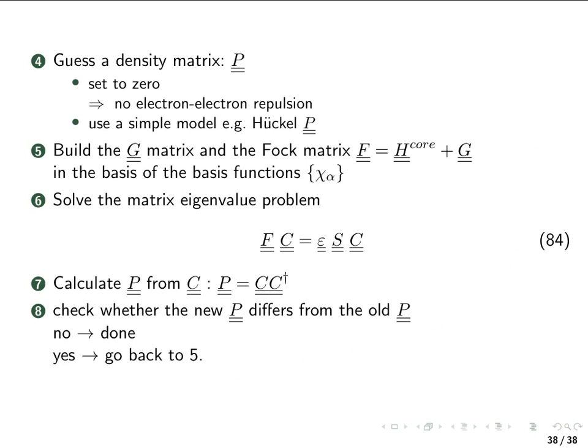If they still differ too much from each other, the density matrix which comes out here and the one which we started with, then we just go back to step 5 and calculate a new Fock matrix with this new density matrix which we have obtained as the solution from diagonalizing the Fock matrix. And then we have to solve equation 84. So the Roothaan's equation once again, we get a new density matrix, we compare it with the one we use to calculate the Fock matrix and again if it's still not converged we iterate. And we iterate until the difference is small enough.